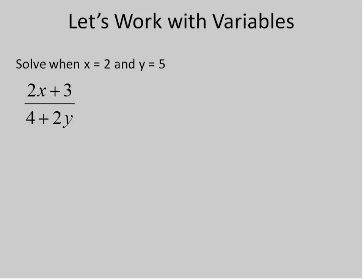So we're going to solve this expression with x being equal to 2 and y being equal to 5. So what I'm going to do first is I'm going to substitute 2 times 2 plus 3 and then 4 plus 2 times y, 2 times 5. And in both cases, I have multiplication and addition on both the top and bottom of this fraction.